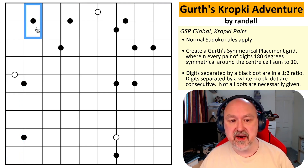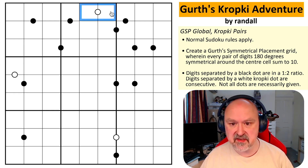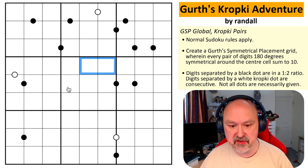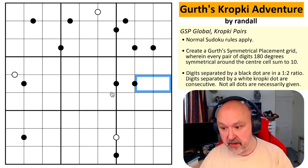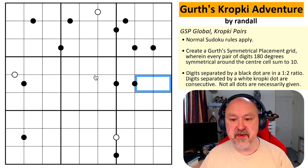Digits separated by a black dot must be in a one-to-two ratio — one is double the other. Cells separated by a white dot must be consecutive. There's no negative constraint on that, so these could be in a one-to-two relationship or consecutive. Not all dots are necessarily given.